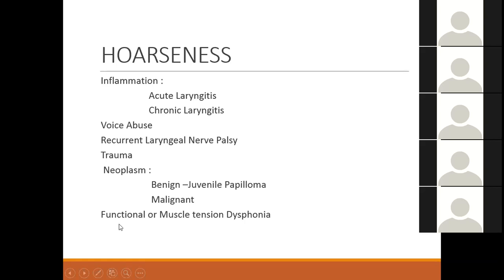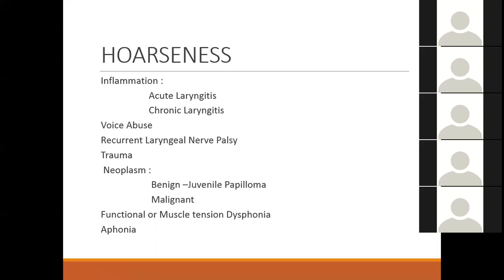Functional muscle tension dysphonia is a condition where many young people present with sudden onset of hoarseness after some emotional trauma. When you look in the larynx, it is mobile and there is no paralysis, but the vocal cords are not coming together — there is some muscle spasm. To differentiate real aphonia from functional aphonia, ask the patient to cough: if there is a voiced cough, it is functional, because coughing brings the vocal cords together, showing they function normally.